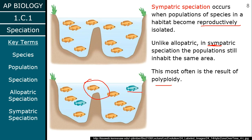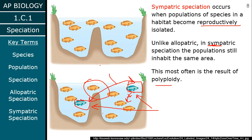Reproductive isolation in sympatric speciation can happen a number of ways — often because of the number of chromosomes, which is what polyploidy refers to. Maybe an individual has one too many chromosomes by random chance — meiosis makes mistakes. If two individuals both resulted from a non-disjunction mistake in meiosis, they have too many chromosomes and can't mate with normal individuals, but perhaps they can mate with each other and have offspring with the same chromosome number. Their DNA is no longer similar because one group has too many chromosomes compared to the other.